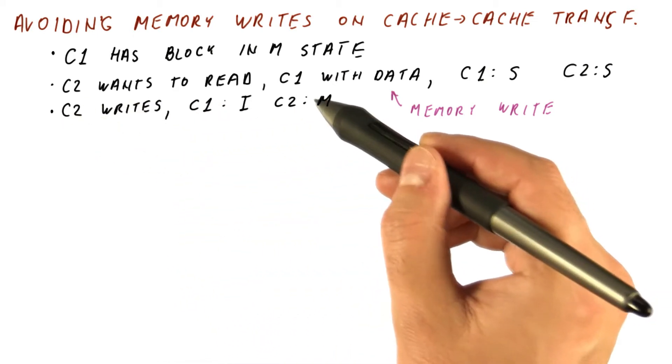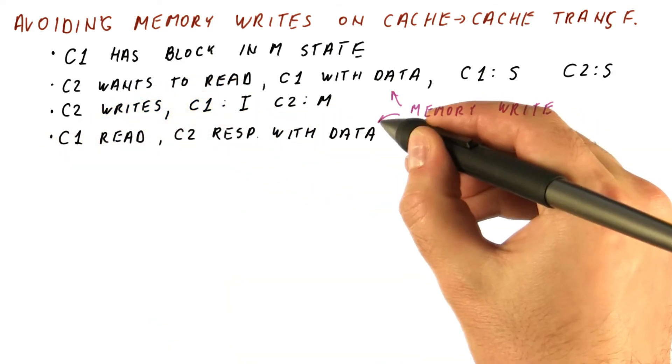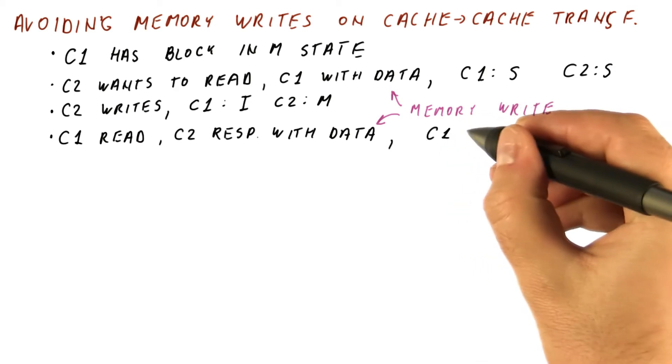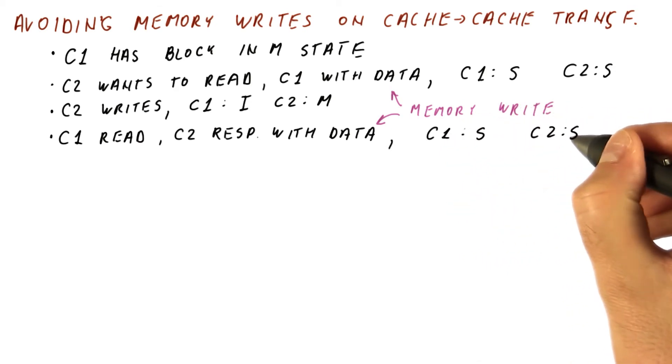Another problem occurs because when C2 has written, for example, and has the data in the modified state, and then C2 responds with data, and that causes a memory write, we again get C1 has the block in shared state, C2 has the block in shared state.